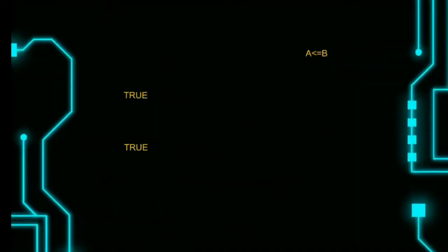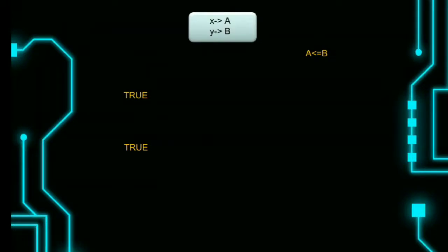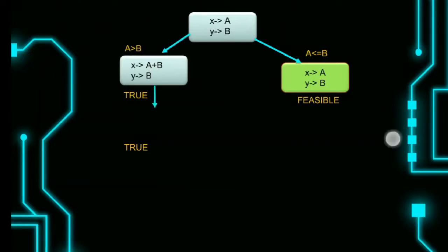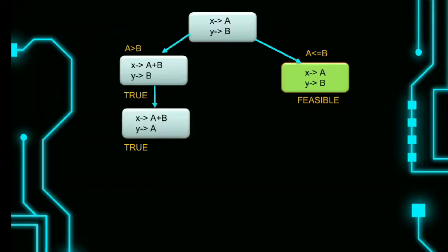Now execute the program on symbolic values. Let's take x as A and y as B. The path condition is a logical formula over the symbolic inputs that encodes all branch decisions taken so far. Now we have a condition. Before that, we have to see what is feasible.